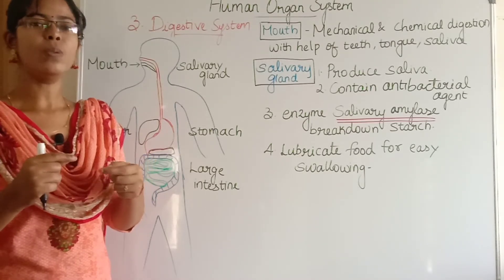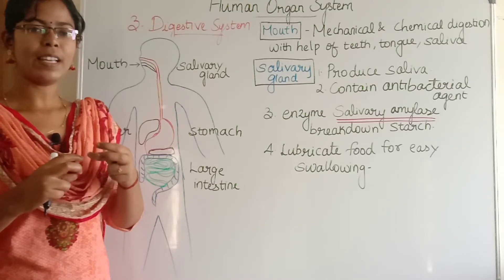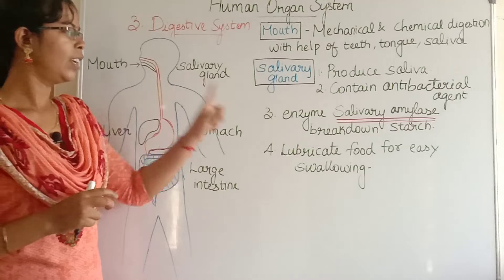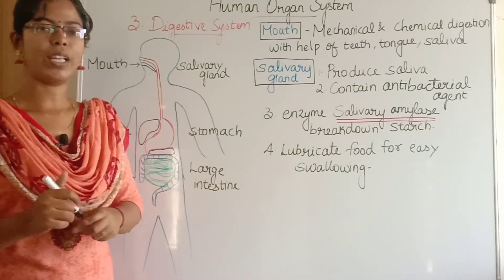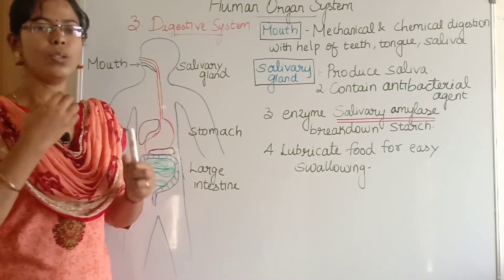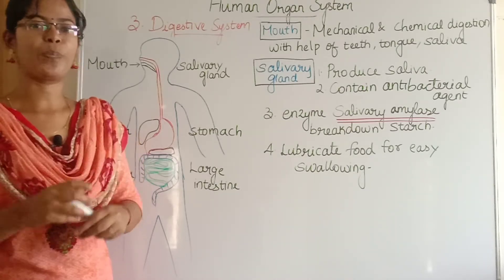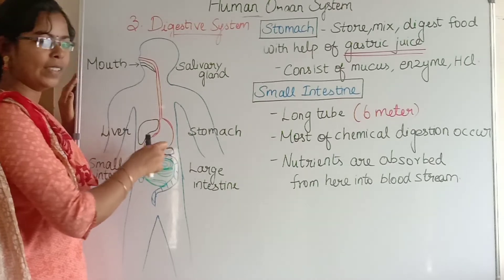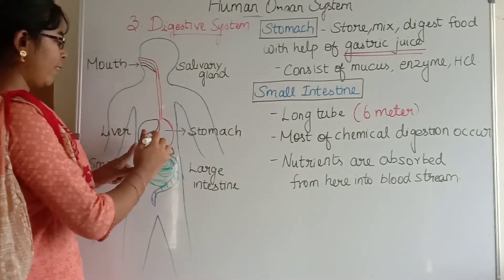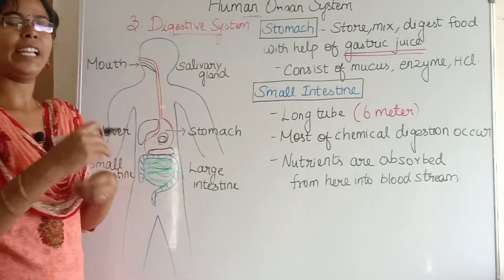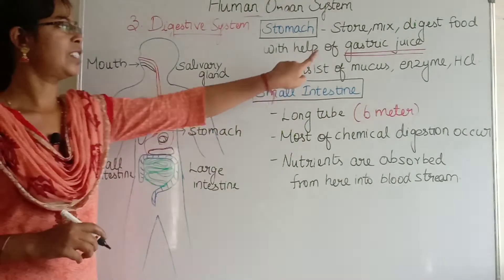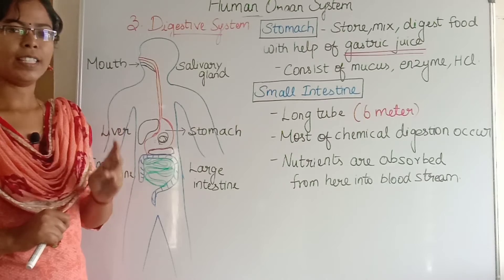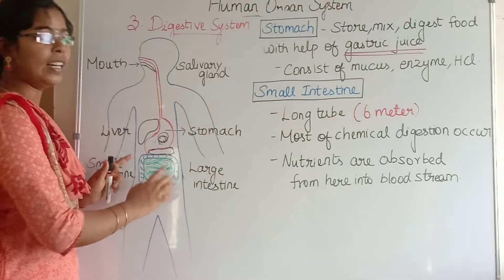Salivary amylase breaks down starch and also lubricates food for easy swallowing. Food then passes through the food pipe or esophagus, and then reaches the stomach. The stomach stores the food and digests it with the help of gastric juice. It also consists of mucus, enzymes, and hydrochloric acid.